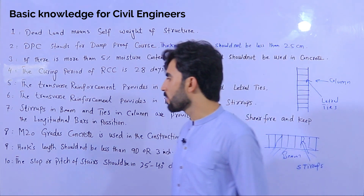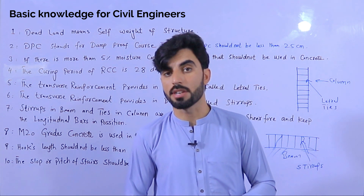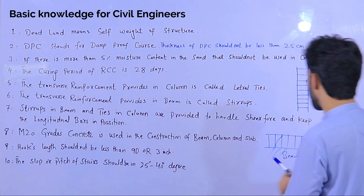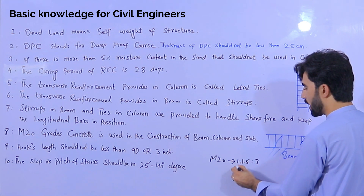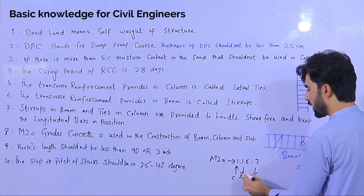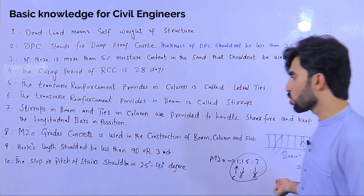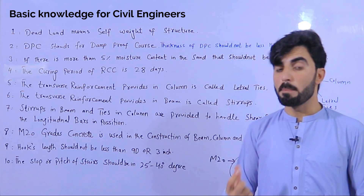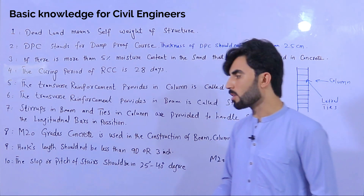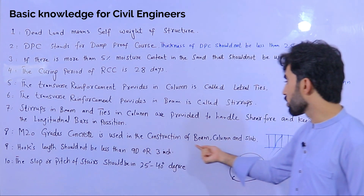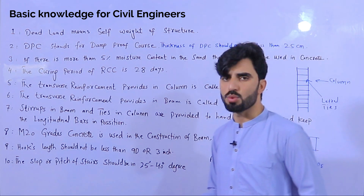The sixth topic is the grade of concrete. M20 is a grade of concrete — M stands for mix and 20 is the characteristic strength of concrete after 28 days. The ratio of M20 is 1:1.5:3 — one part cement, 1.5 parts sand, and 3 parts aggregate (crush). This M20 grade concrete ratio should be used in beams, columns, and slabs. We should not use less than M20 grade concrete for these main structural elements, otherwise problems will arise. I saw many people using M15 grade concrete, which is not suitable.